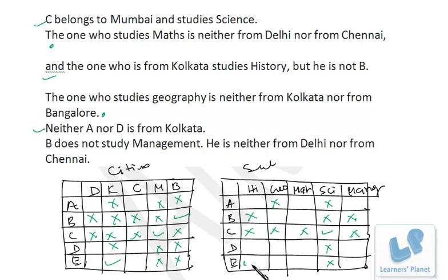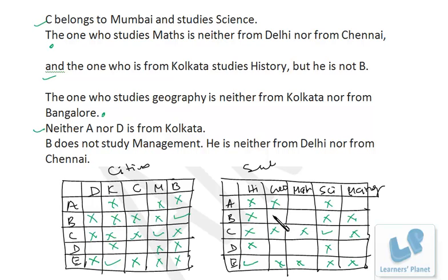We mark E for History and add all crosses. Now, the one who studies Geography is neither from Kolkata nor Bangalore. Since B is from Bangalore, B doesn't study Geography. That leaves B studying Maths, so all other subject options for B are cancelled. Subject-wise we are now clear except for A and D, and city-wise we are clear for every person.